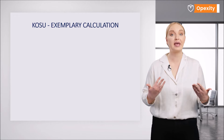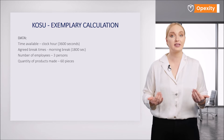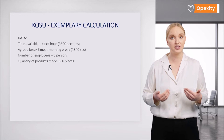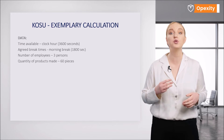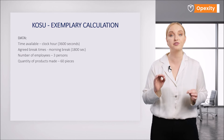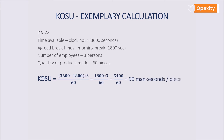Let's make an exemplary Kosu calculation. This will be a reference period with a morning break of 30 minutes for employees. The workstation is not in operation during the break. The workstation is usually operated by three employees. During this period, 60 pieces of finished goods were made. This gives us 3,600 seconds of time available in a clock hour, where the break is 1,800 seconds. By substituting all the numbers into the formula, we obtain an actual Kosu result of 90 man seconds in the reference period under consideration.